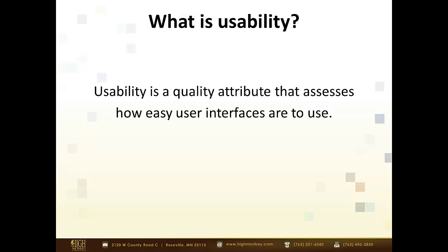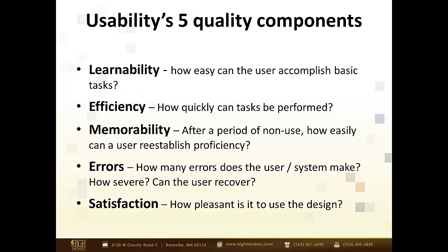So what is usability and why do we want to talk about it? The official definition is: usability is a quality attribute that assesses how easy user interfaces are to use. What does that mean to us? Can you figure it out or can you not? When we look at things, we look at five quality components. The first and foremost being learnability — how easy is an interface to learn? We've definitely seen in the SharePoint world that there are some definite components that can be kind of difficult at times, so we're going to be looking at some of the learnability issues and how we can overcome that.